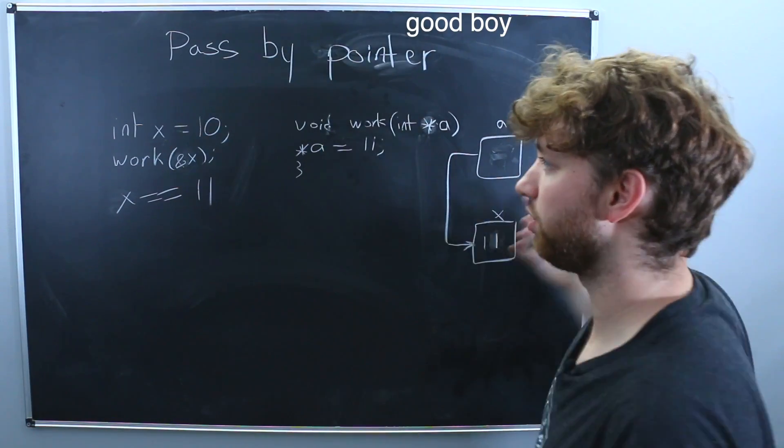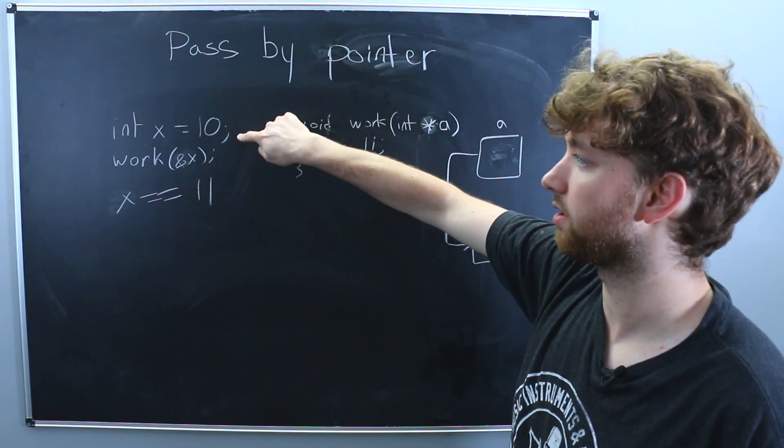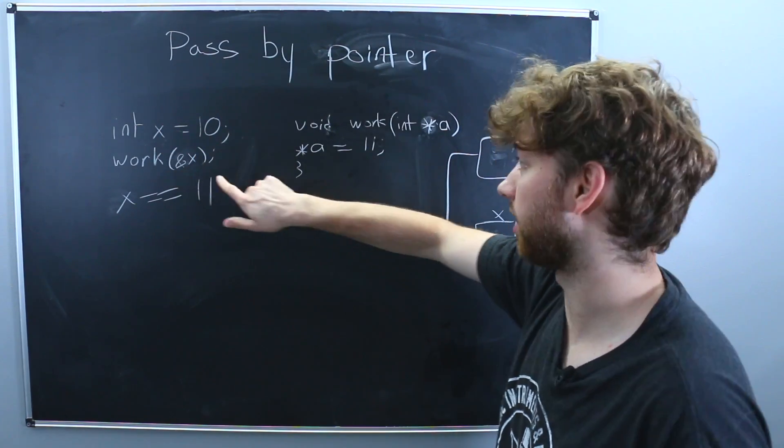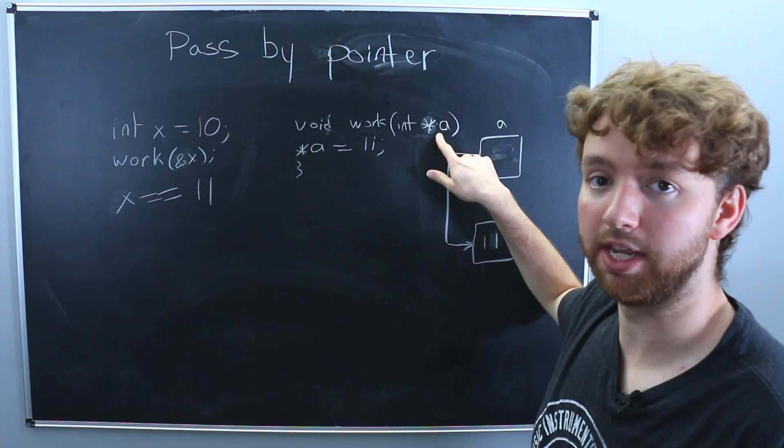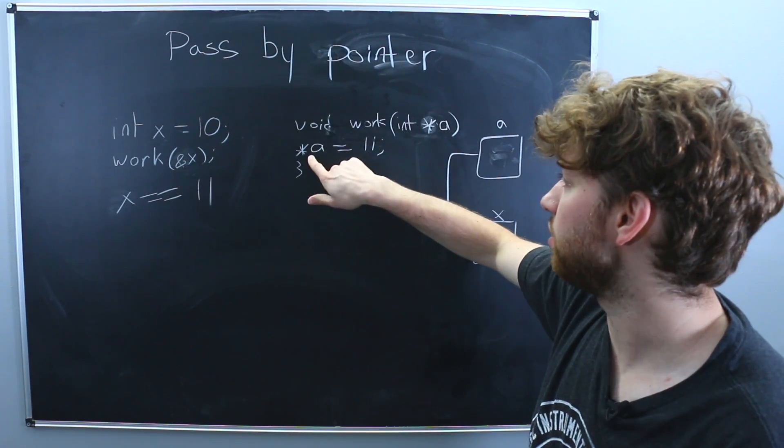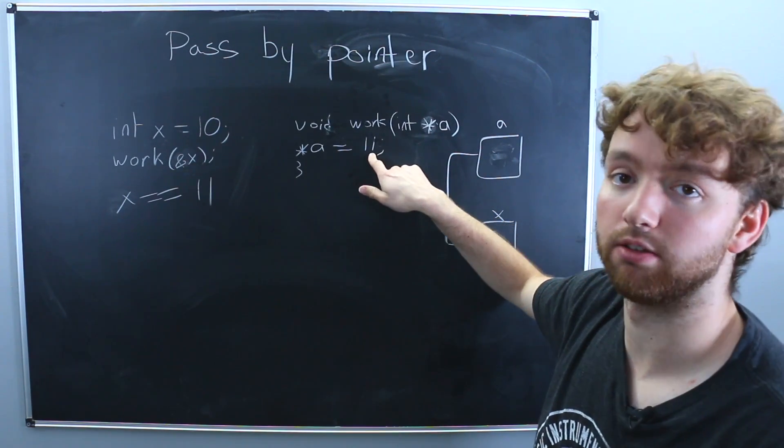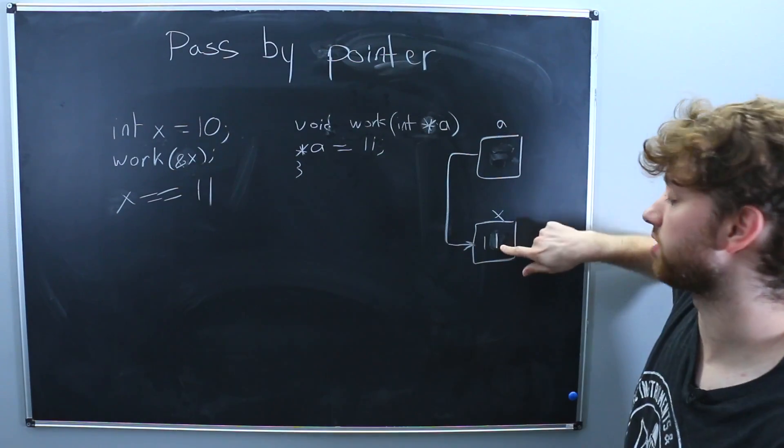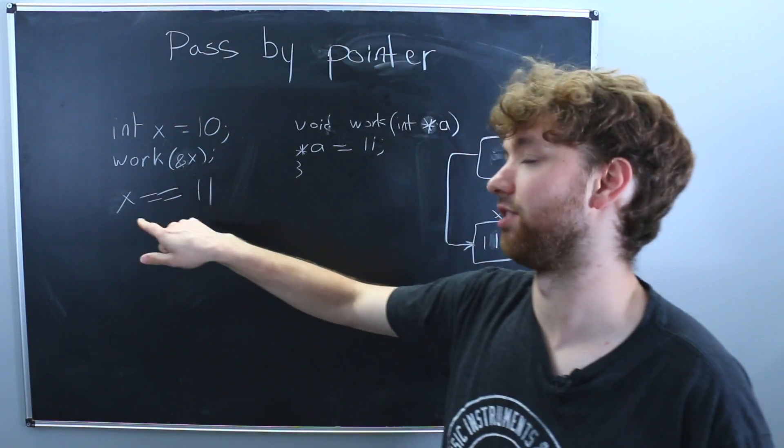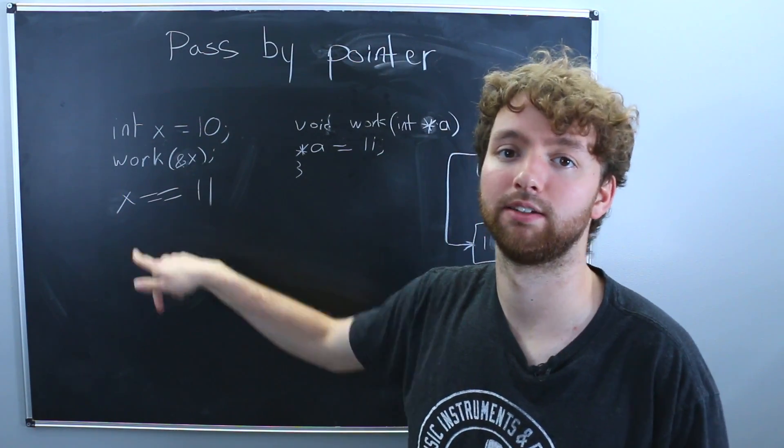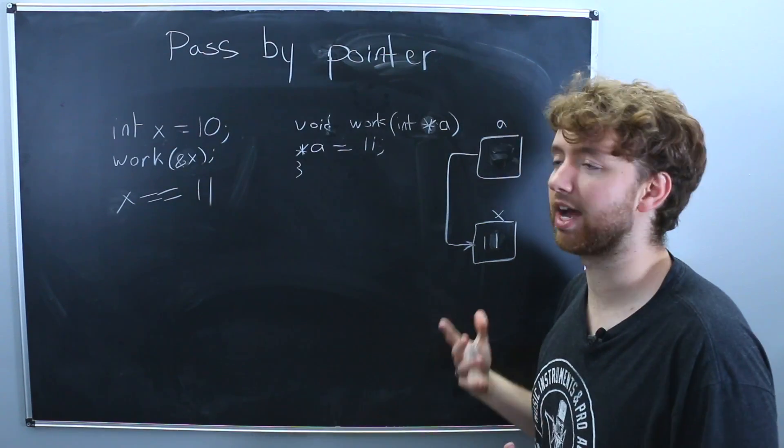So let's just review, we create a variable x, we pass a pointer to x to the function, this is of type int pointer, we dereference a to set its value to 11, which changes the data in memory, and those changes are seen on the outside. So that's pass by pointer.